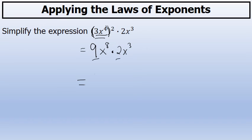First, 9 times 2 is 18, and x to the eighth times x to the third is a situation where you're multiplying the same base. When you multiply the same base, you add the exponents, so the power on x will become 8 plus 3, or 11.